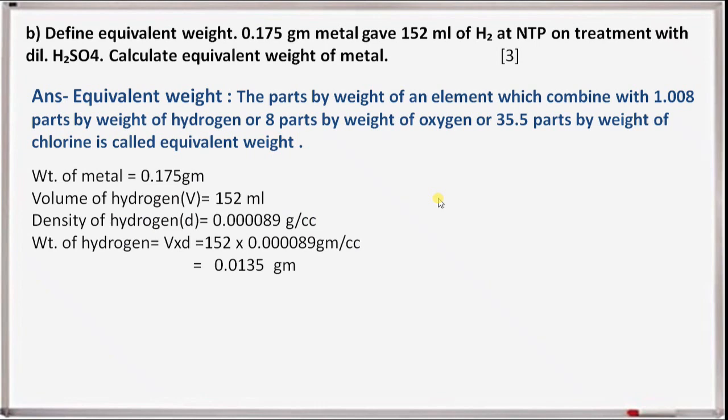Problem: 0.175 grams of metal gave 152 ml of hydrogen at NTP on treatment with dilute sulfuric acid. Here, weight of metal is 0.175 grams, volume of hydrogen V is 152 ml, density of hydrogen is 0.000089 g/cc. Weight of hydrogen equals V into D: 152 into 0.000089 equals 0.0135 grams.